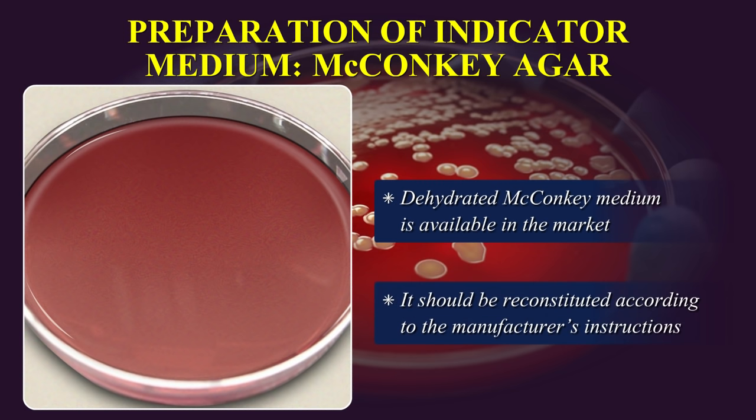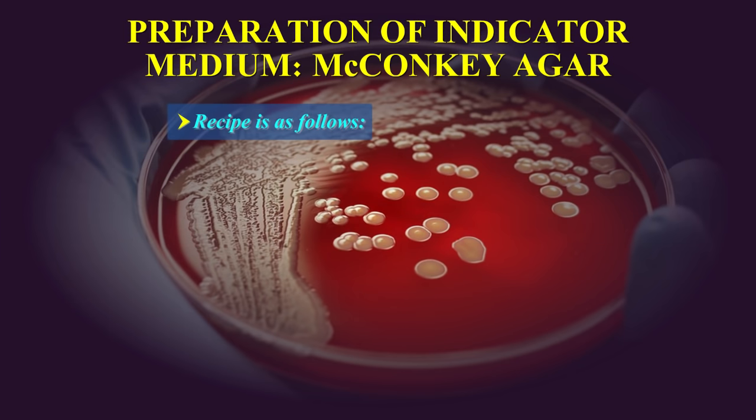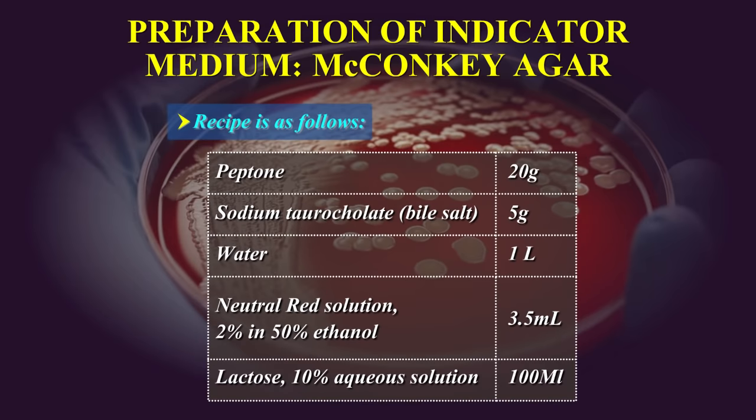All directions for preparation, sterilisation, and storage of dehydrated media should be strictly adhered to. However, if you choose to make your own medium, the recipe is as follows: Peptone 20 grams, Sodium taurocholate 5 grams, Water 1 litre, Neutral red solution 2% in 50% ethanol 3.5 ml, Lactose 10% aqueous solution 100 ml.